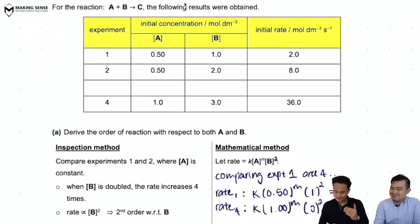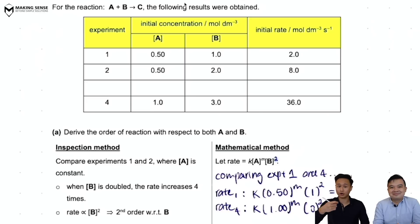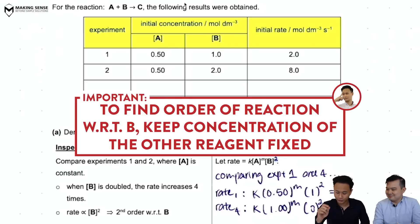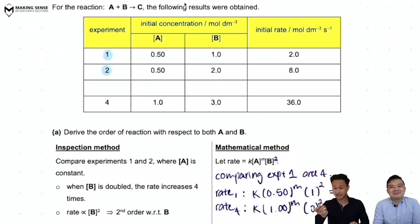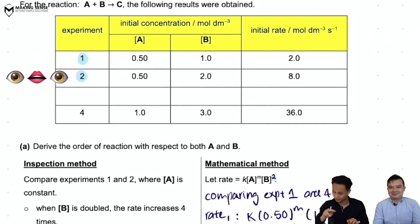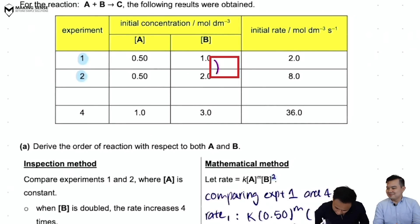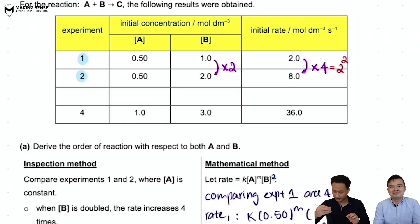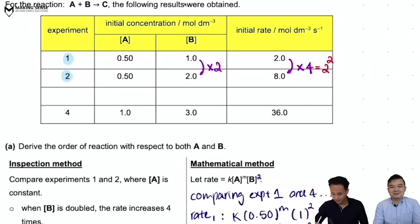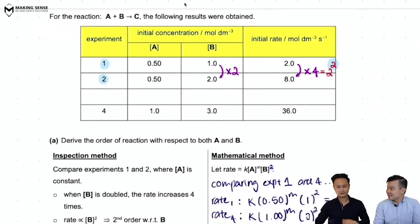For the inspection method: to find the order with respect to B, you need to keep the concentration of A fixed. Looking at four experiments, experiments 1 and 2 have the same concentration of A. As the concentration of B increases by a factor of 2, the rate increases by a factor of 4. Since 4 = 2², this tells us the order of reaction with respect to B is 2. The eyeball method is fast and powerful!